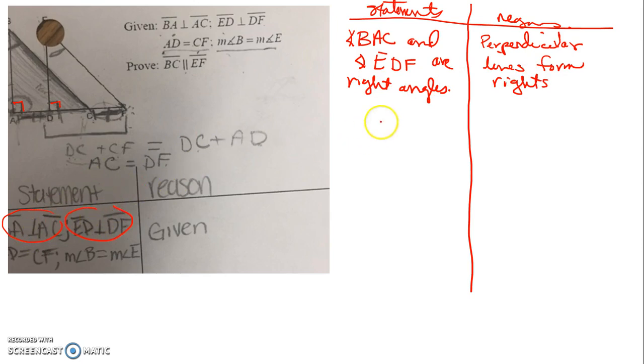As soon as we know those angles are right angles, we can say angle BAC is congruent to angle EDF, and the reason is all right angles are congruent. I know it probably feels silly, you probably feel like you should have been able to jump right to there, but if you're just given that those lines are perpendicular, you first need to state that those two angles are right angles.